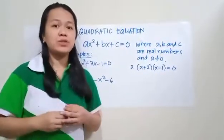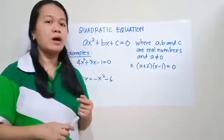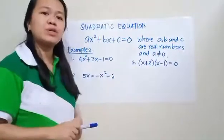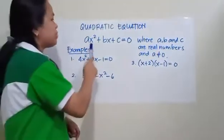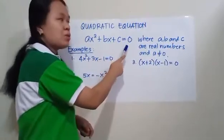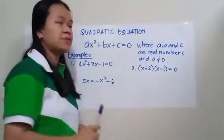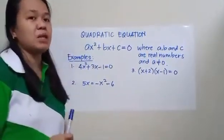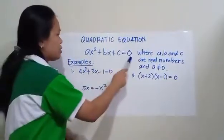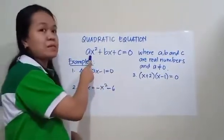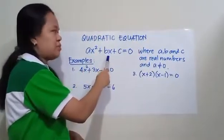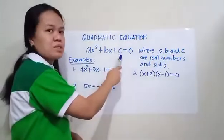A quadratic equation is an equation whose highest power of the variable is 2. A quadratic equation can be written in the form AX squared plus BX plus C equals 0, wherein A, B, and C are real numbers, and A is not equal to 0. In this equation, AX squared is the quadratic term, BX is the linear term, and C is the constant term.